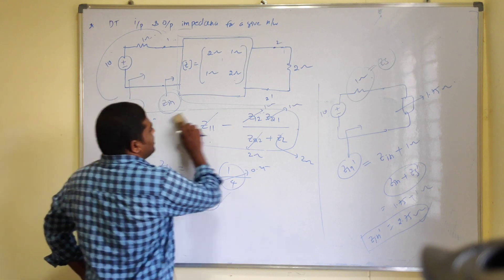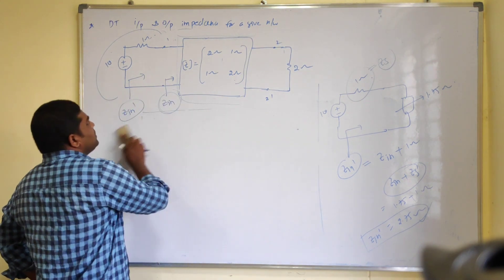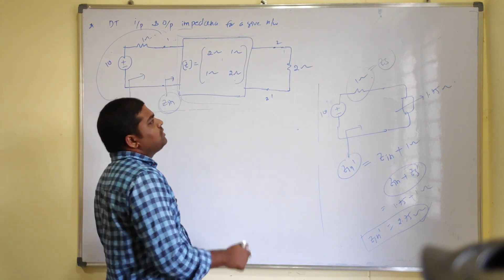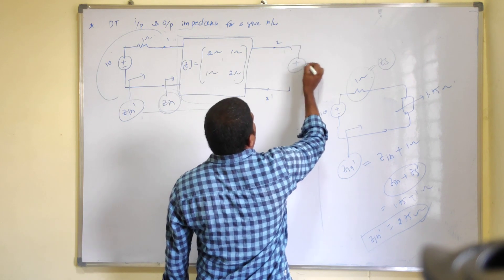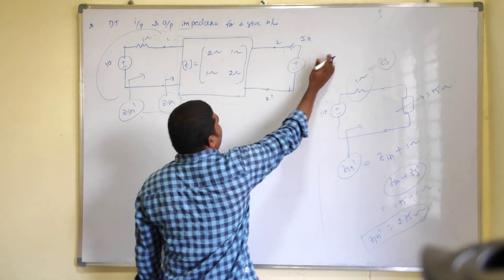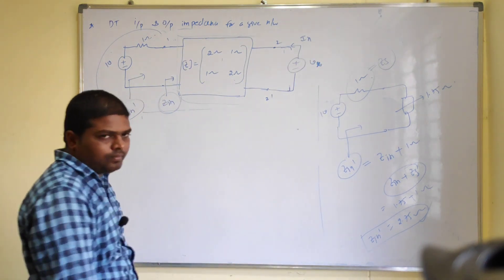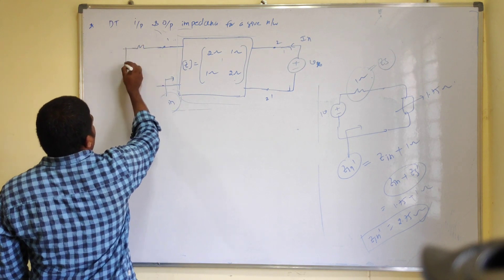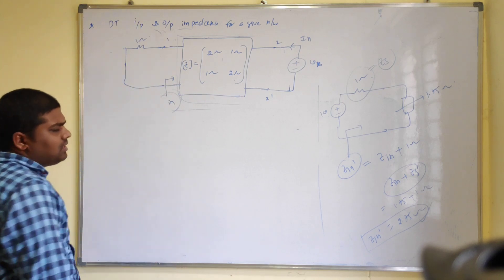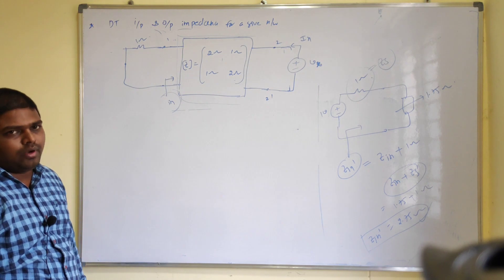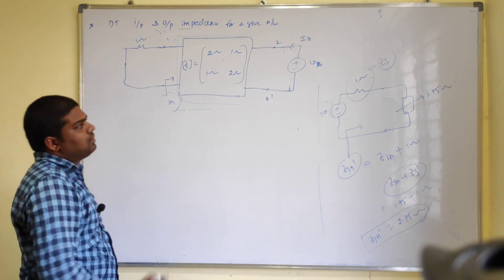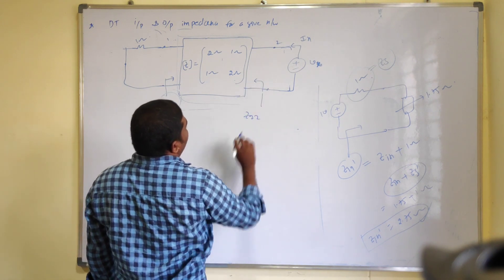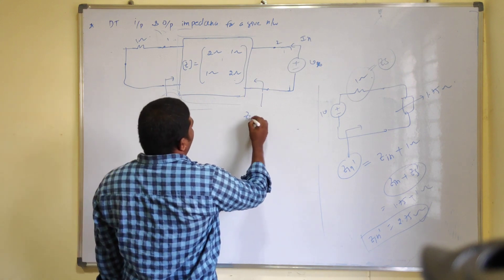Now you need to calculate output impedance. For output impedance, first remove whatever load element is connected, and in that place add one ideal voltage source producing a current Ix. At the input port, short the source and keep the resistance as it is. These are the steps to perform before calculating output impedance. For this network we can indicate with Z22.